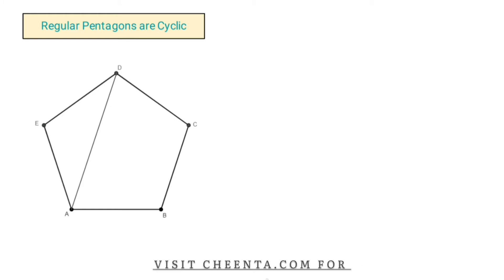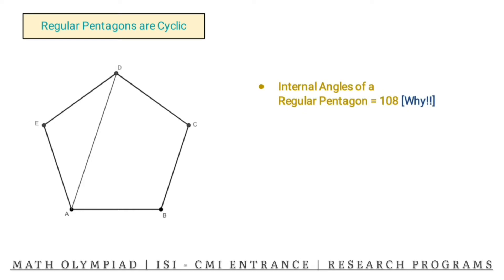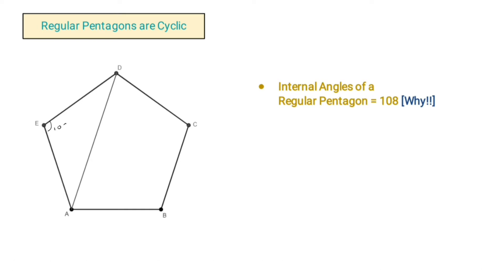To do that we need a few facts. The first fact is the internal angle of a regular pentagon is 108°. So this angle is also 108°. Triangle ADE is isosceles because both AD and AE are sides of the regular pentagon, making the two base angles equal — they will each be 36°.